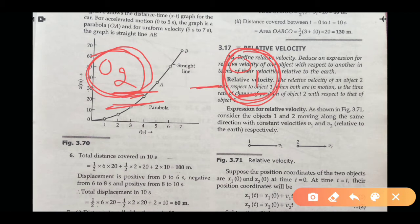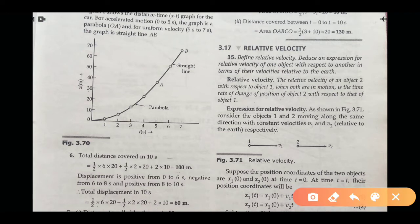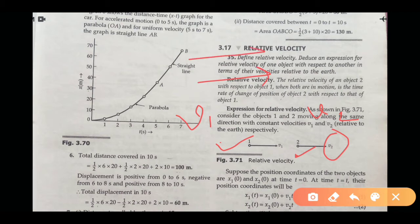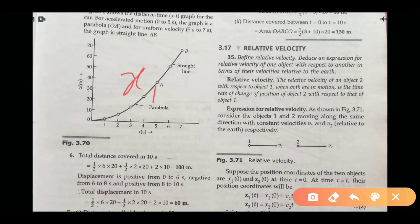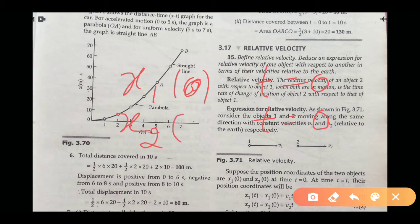Now, finding the expression for relative motion. यहां पर हमने consider किया हुआ है: object 1 जो है वो v1 velocity से और object 2 जो है वो v2 velocity से same direction में move कर रहा है। x1(0) जो है, t = 0 time पर first object की position है, और x2(0) जो है, t = 0 पर second object की position है।